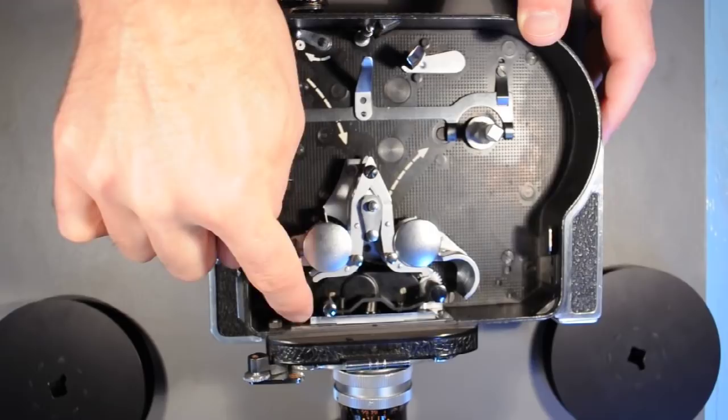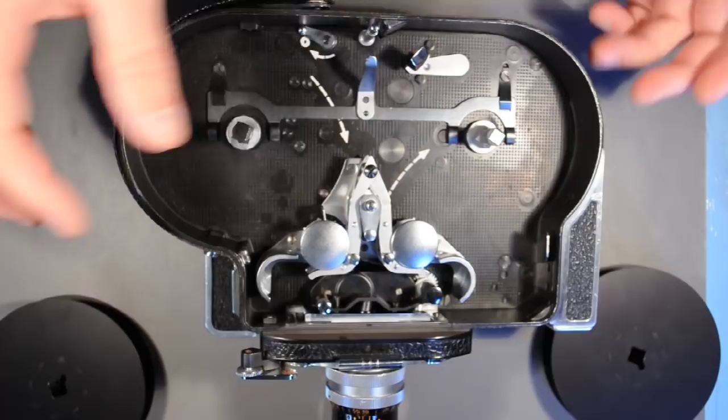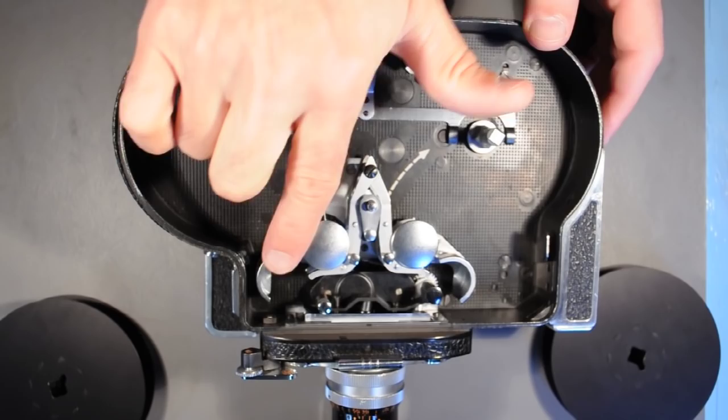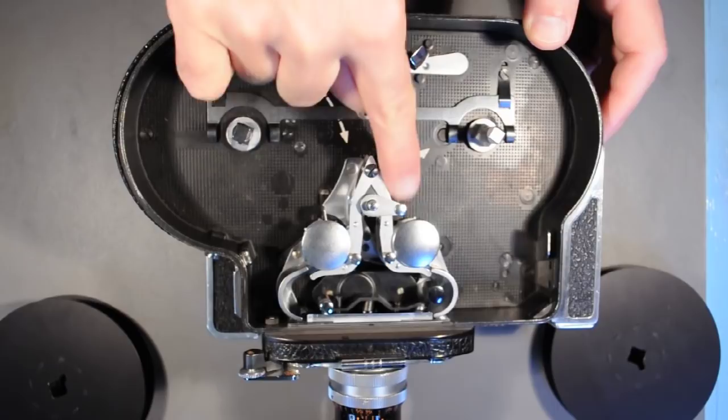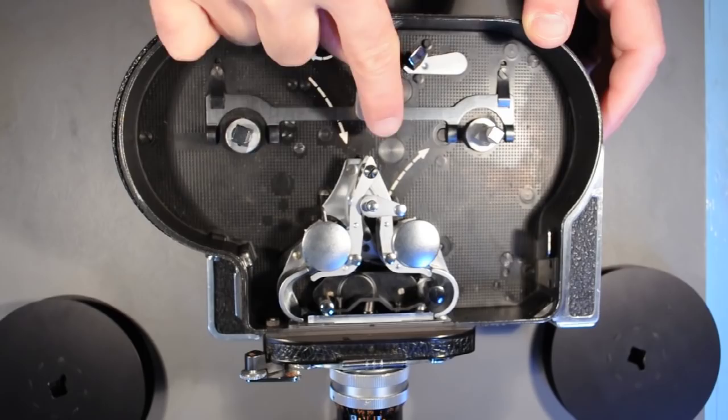To load, the first step I'm going to do here is close the loop formers. There's an upper loop former and lower loop former, and they allow the film to load cleanly through the gate area. This small lever closes them. I'll do that one more time: open, close.